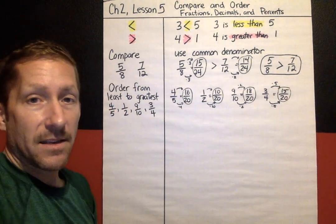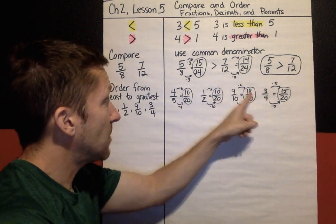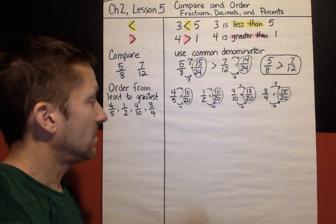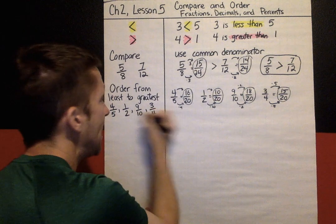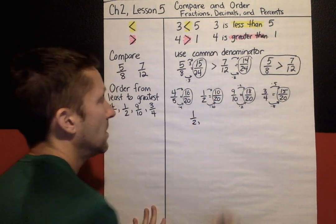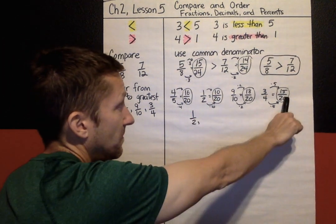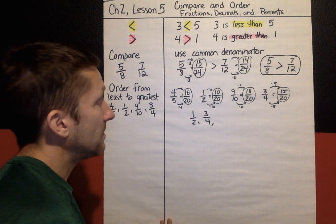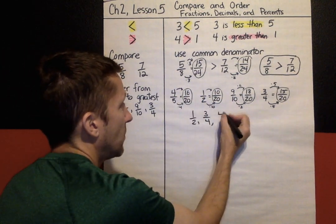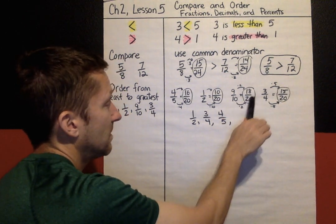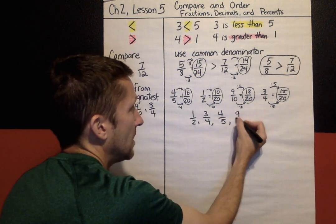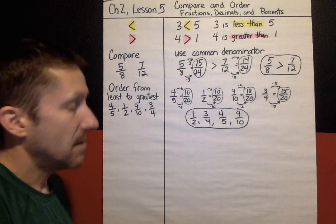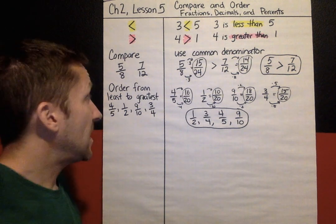Now I can clearly see which one is the least. Looking at my numerators, the smallest is ten twentieths, but I'm going back to the original — that's one-half. The next smallest numerator is fifteen, which was three-fourths. Then sixteen, which was four-fifths. And the greatest is eighteen out of twenty, which was nine-tenths. There's my answer in order. So that's the common denominator strategy.